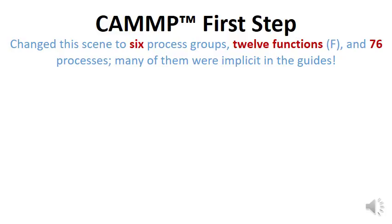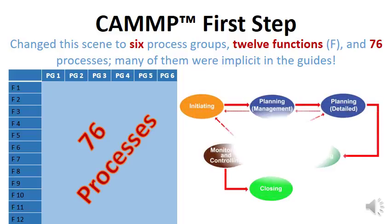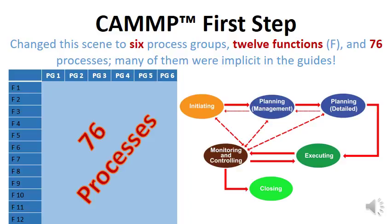These 76 processes are not just because we have 12 functions — many processes are embedded in the PMBOK guide implicitly but do not have dedicated processes. For example, the PMBOK guide says we have to appoint the project manager in the initiation process group but doesn't have a dedicated process for it; it talks about mobilizing a project management team but has no dedicated process; and there is a missing process for controlling the team. Similarly across many other functions and knowledge areas, which is why the number went from 47 to 76 processes.